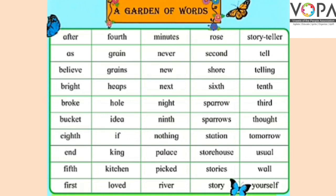'New' — n, e, w. New یعنی نیا۔ New کا opposite بھی old ہوتا ہے۔ 'Next' — n, e, x, t. Next یعنی اگلا۔ 'Ninth' — ordinal form of nine. 'Nothing' — n, o, t, h, i, n, g. Nothing یعنی کچھ نہیں۔